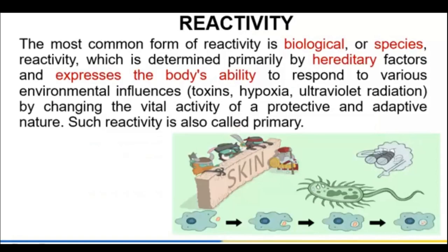The most common form of reactivity is biological or species reactivity, which is determined primarily by hereditary factors. It expresses the body's ability to respond to various environmental influences — toxins, hypoxia, ultraviolet radiation — by changing vital activity of a protective and adaptive nature. Such reactivity is also called primary.